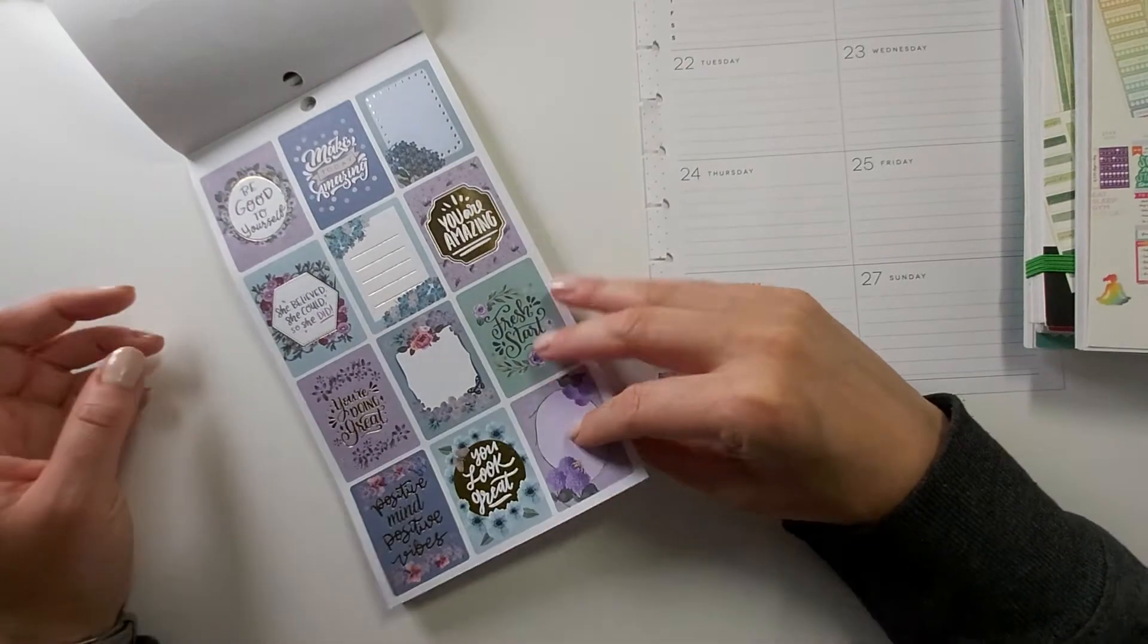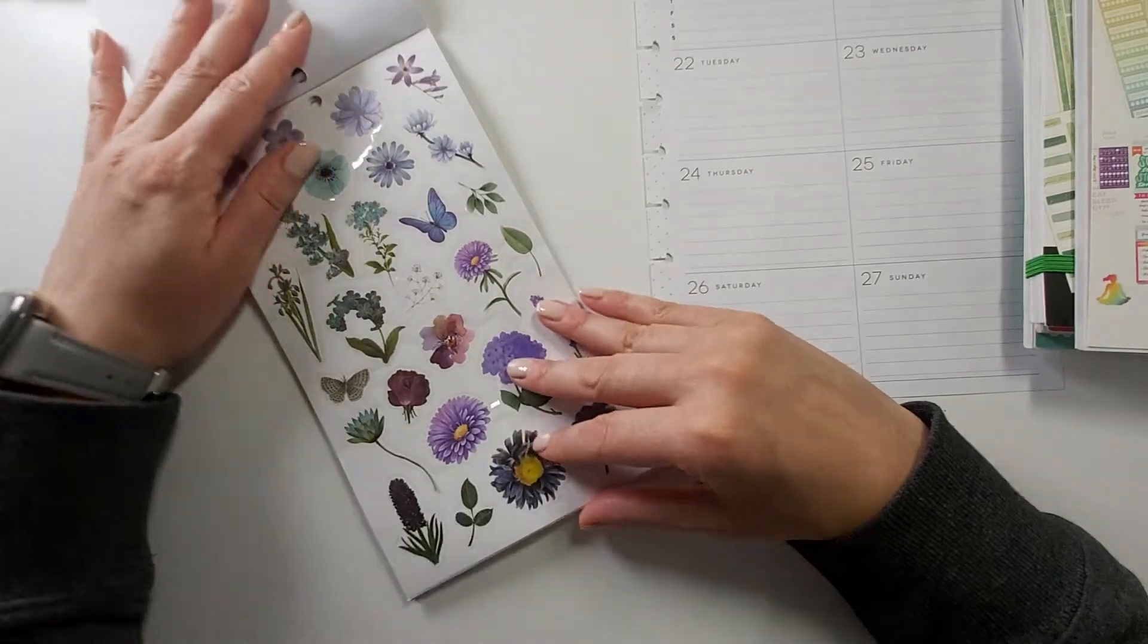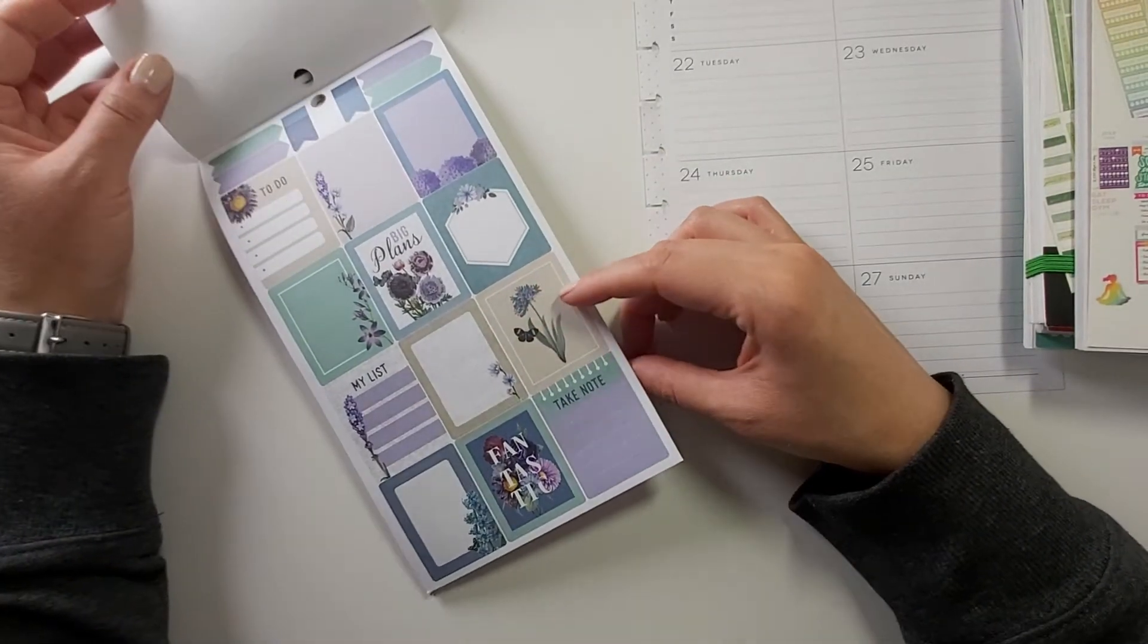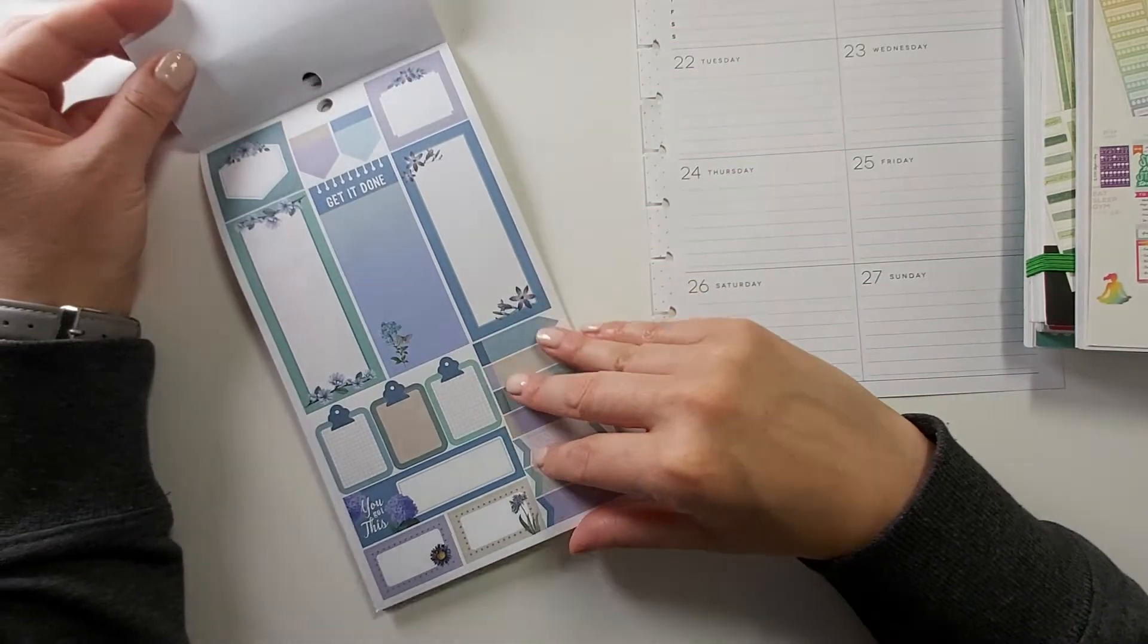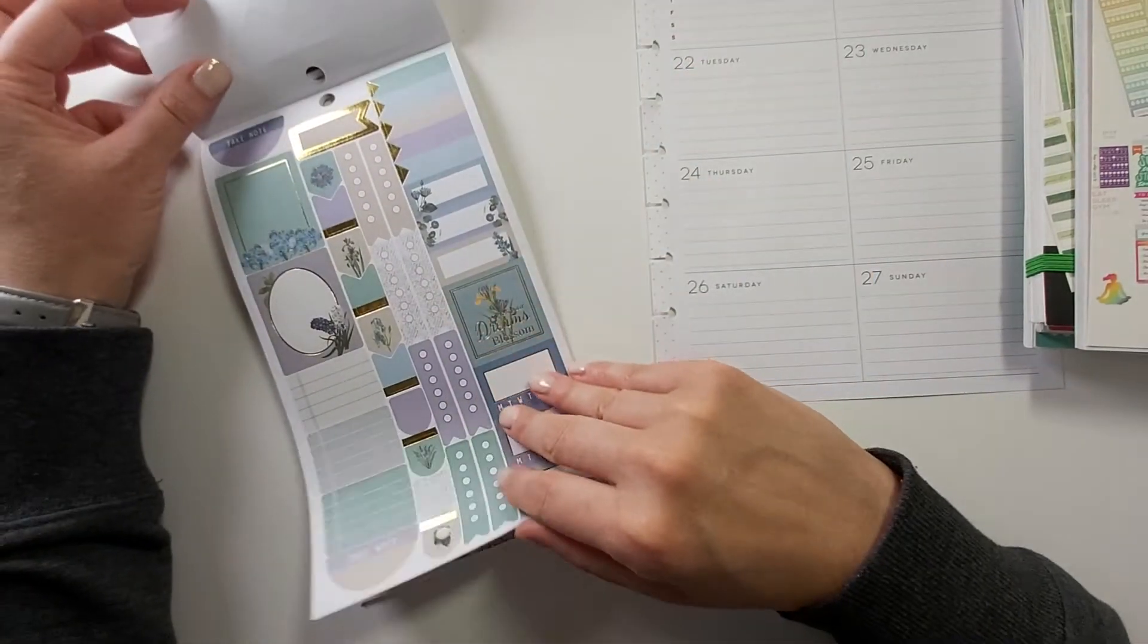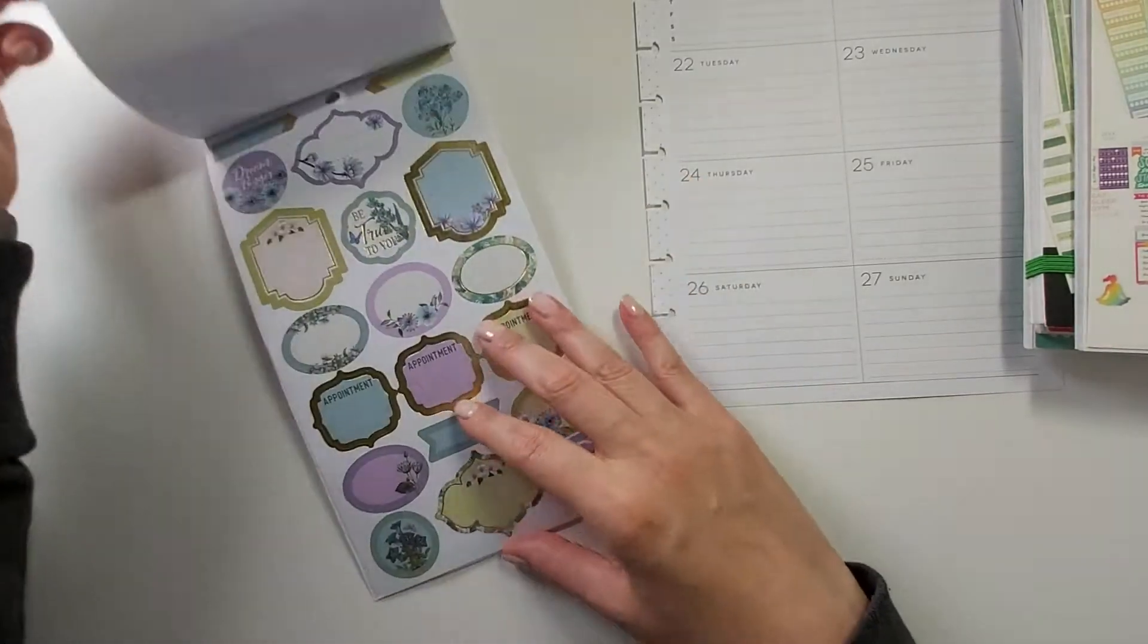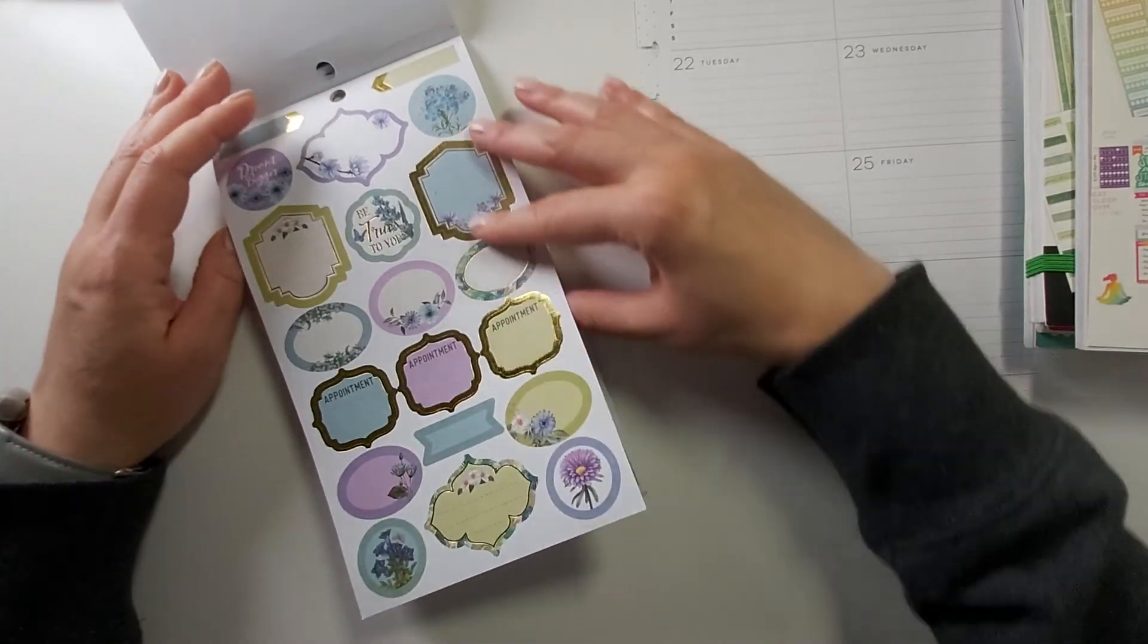So now we're into like a lavendery purpley. Oh there's our clear stickers. Okay those are cute, I'm not a super fan of blue but I like purple. These are nice, that's really cute. More of these clipboards. Little checklist friends. Oh that feels thick. Appointment boxes.